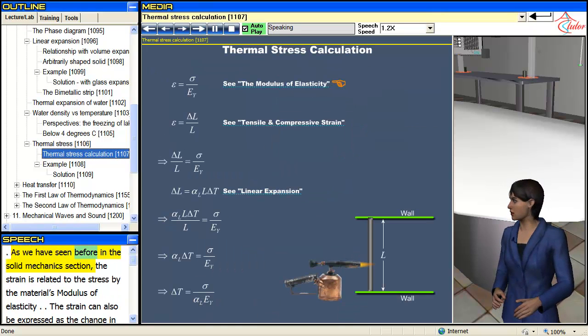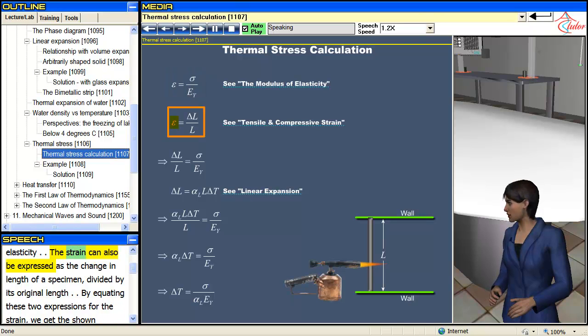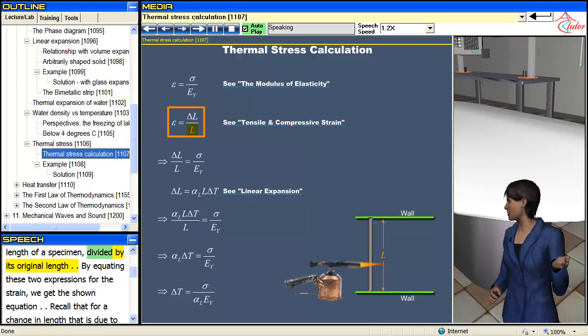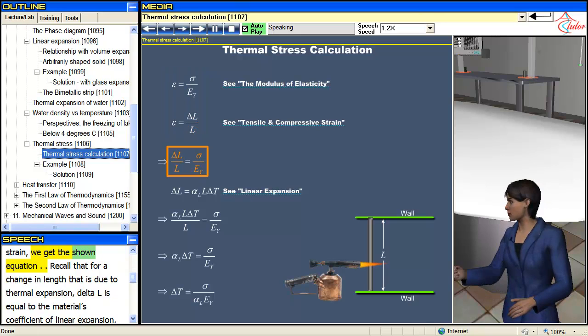As we have seen before in the solid mechanics section, the strain is related to the stress by the materials modulus of elasticity. The strain can also be expressed as the change in length of a specimen divided by its original length. By equating these two expressions for the strain, we get the shown equation.